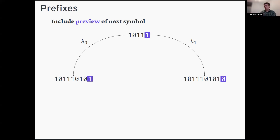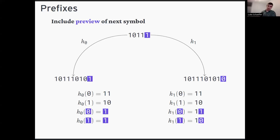As drawn, this can't work — there are no morphisms h0 and h1 that accomplish it directly. But if we add one extra symbol representing a preview of the next symbol in the sequence, then h0 and h1 do exist. This preview symbol uses a separate copy of the alphabet (shown in purple). On the original alphabet, h0 and h1 both perform h in the ordinary way. On the purple copy, they also apply h but may truncate the string and color the last symbol purple.